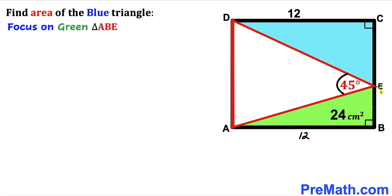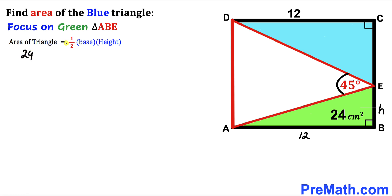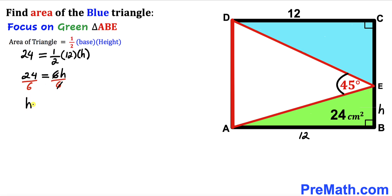Let's assume side length EB is our height H. Recalling the area of a triangle formula: Area = ½ × base × height. Filling in the blanks: 24 = ½ × 12 × H. Simplifying the right-hand side gives 6H. Dividing both sides by 6, our height H turns out to be 4 centimeters.